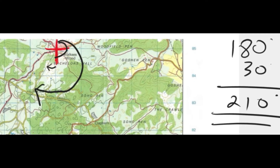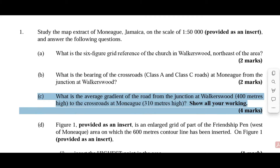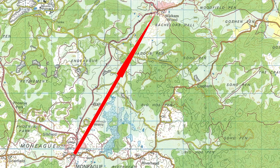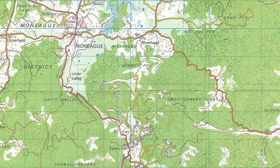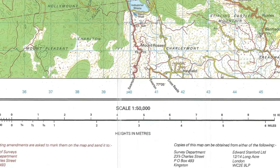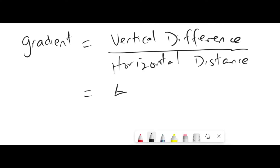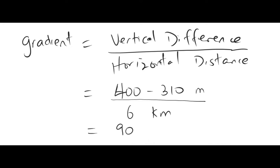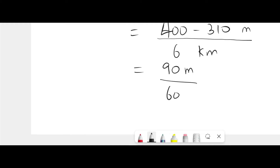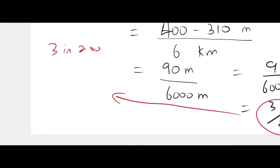Always double-check and triple-check your answers in your exam. Part C: what is the average gradient of the road from the junction at Walkerswood to the crossroad at Monique? Show all your working. Gradient equals vertical difference divided by horizontal distance. The distance is 6 kilometers. The vertical difference is 400 minus 310 meters, which is 90 meters, divided by 6,000 meters — like units — giving you 3 divided by 200.